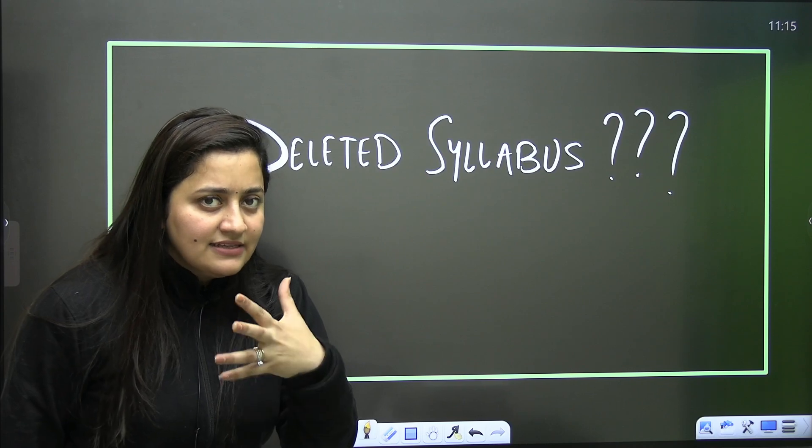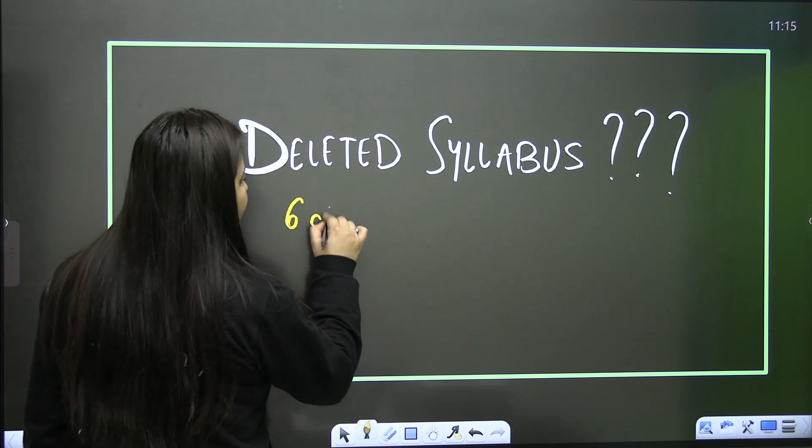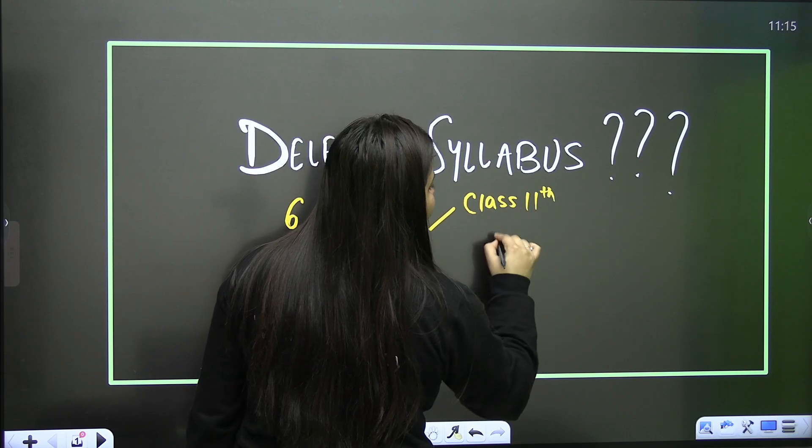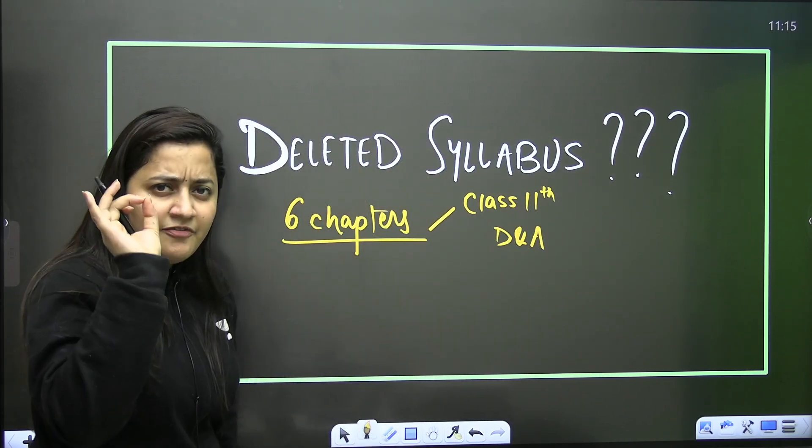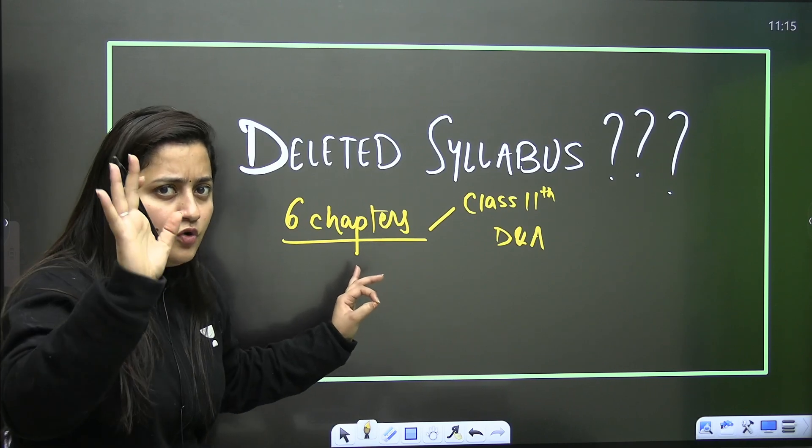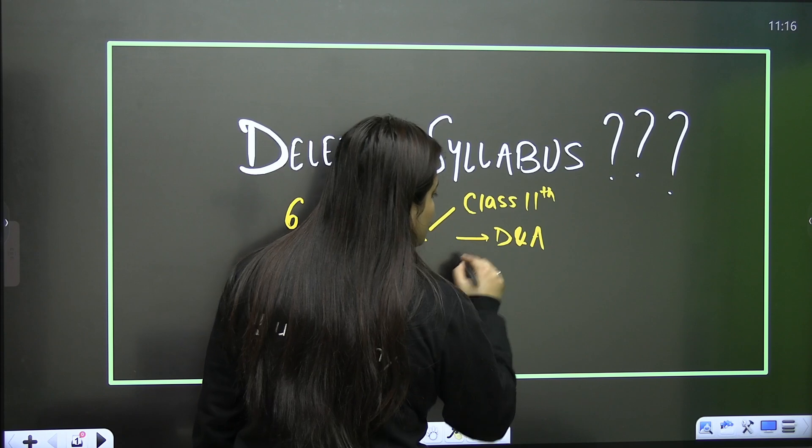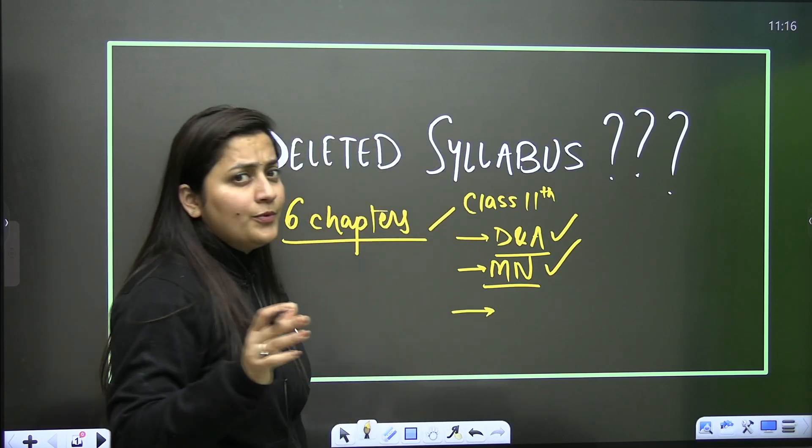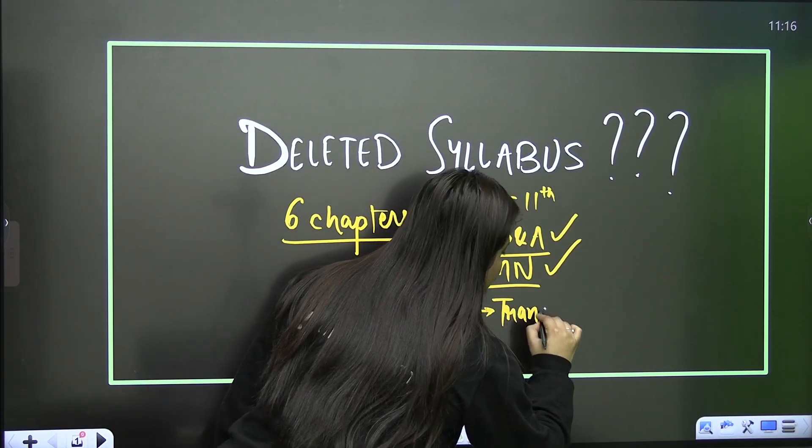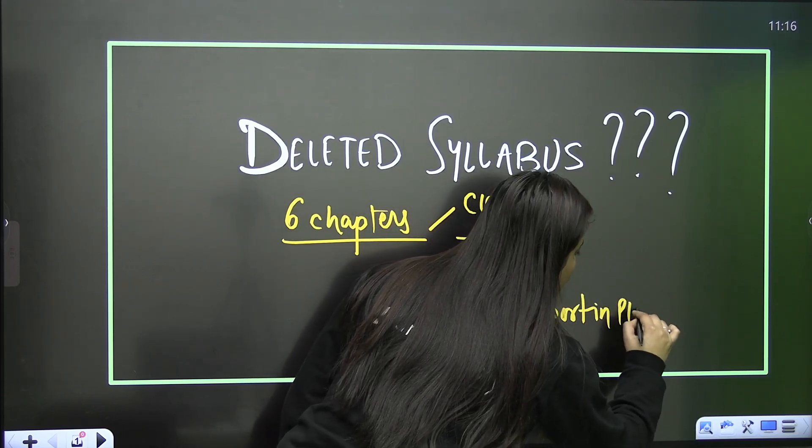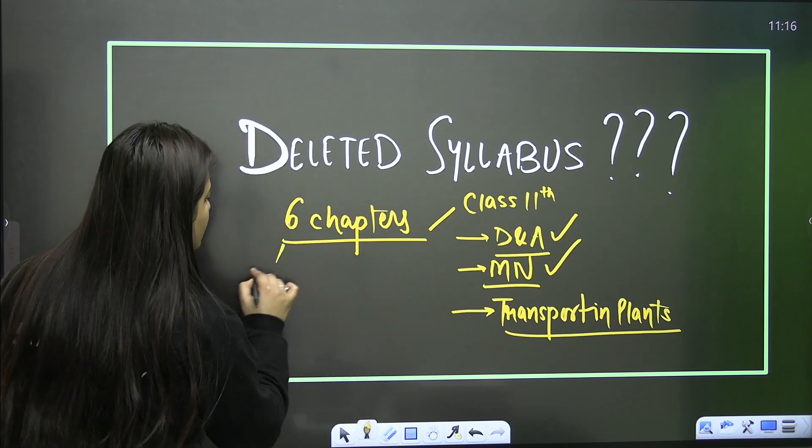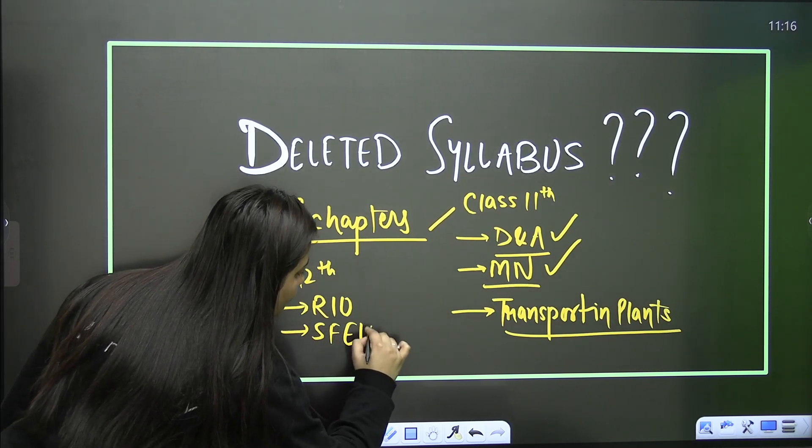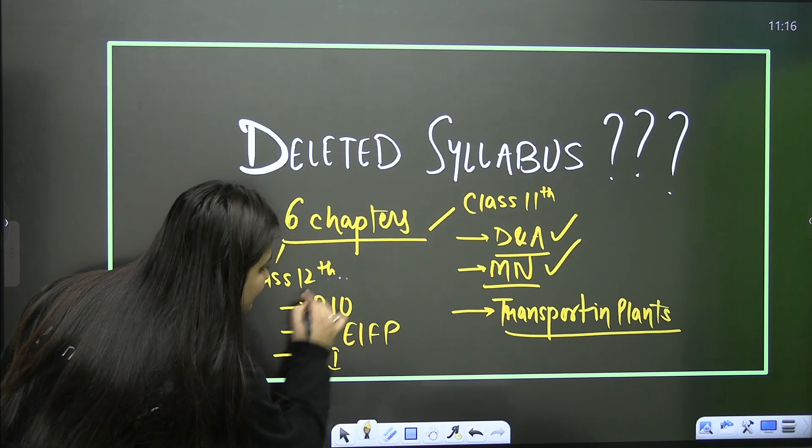We all know that as per the latest NEET syllabus update, six chapters are deleted from our syllabus. When you talk about class 11, three chapters are deleted: digestion and absorption, mineral nutrition, and transport in plants. From class 12 syllabus, reproduction in organisms is deleted, strategies for enhancement in food production is deleted, and environmental issues.